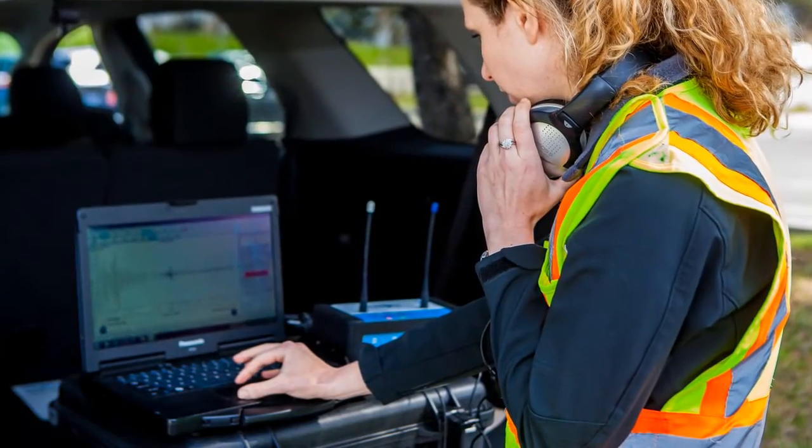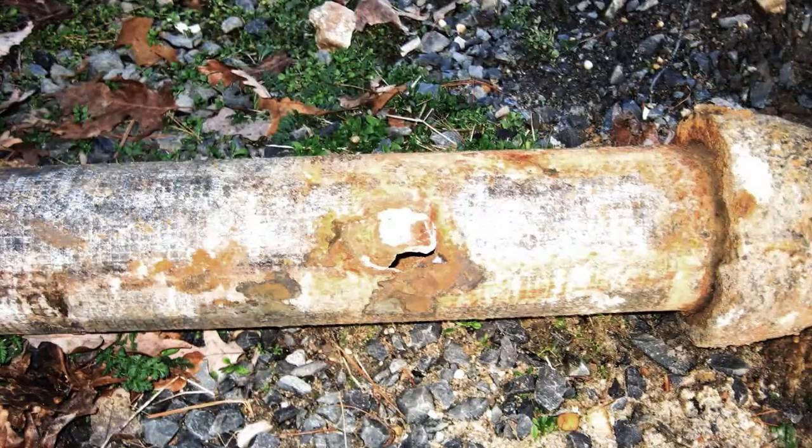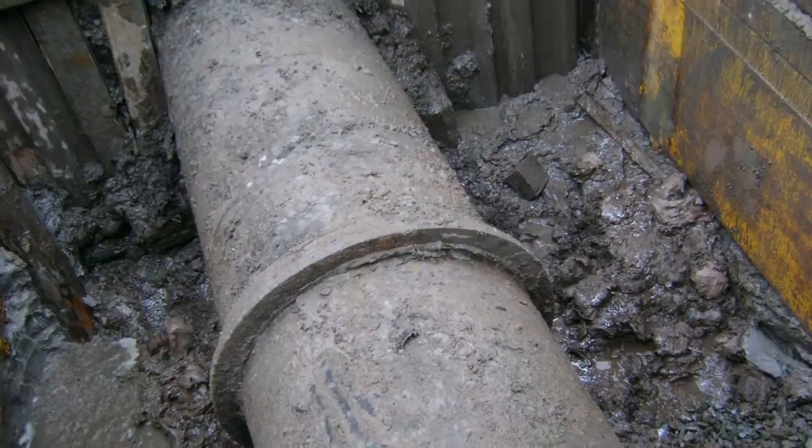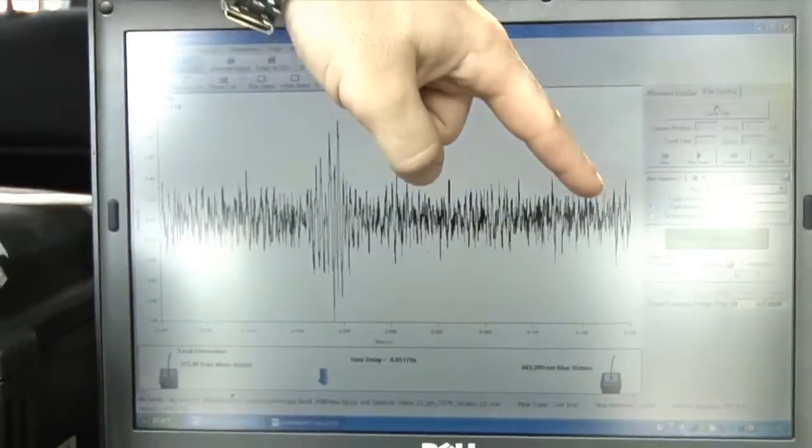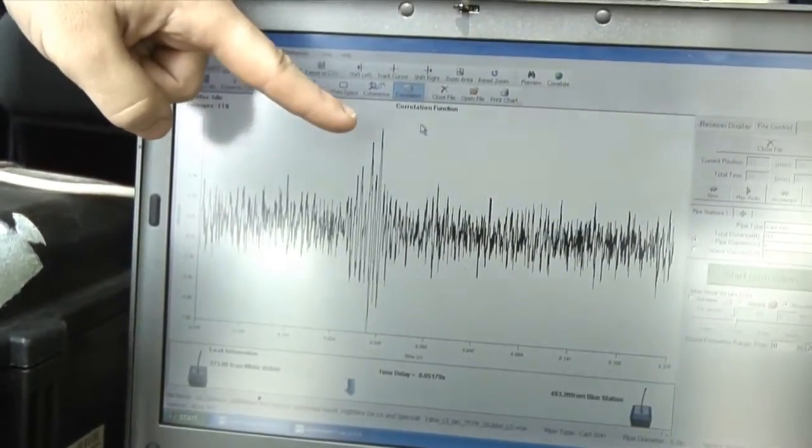The E-Pulse approach has been proven effective on both distribution and transmission mains and on a wide variety of pipe materials. A unique benefit of E-Pulse is that it simultaneously checks the pipe segment for leaks during an inspection.